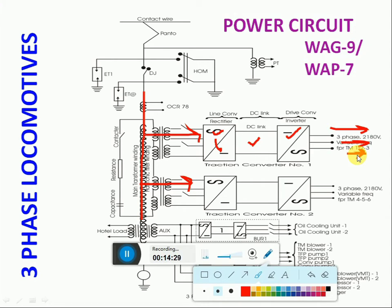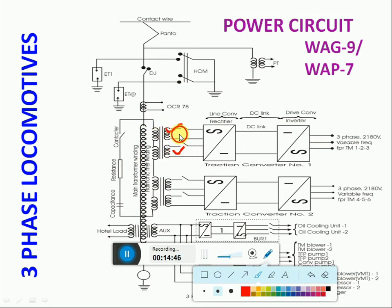The output of the inverter is 3-phase, 2180 volts; the input to each winding is 1269 volts with 2 windings, both connected in series. The output is variable voltage and variable frequency: voltage varies from 0 to 2180 volts and frequency from 65 to 132 Hz. In traction converters, two types are available: GTO (Gate Turn-Off) and IGBT (Insulated Gate Bipolar Transistor).